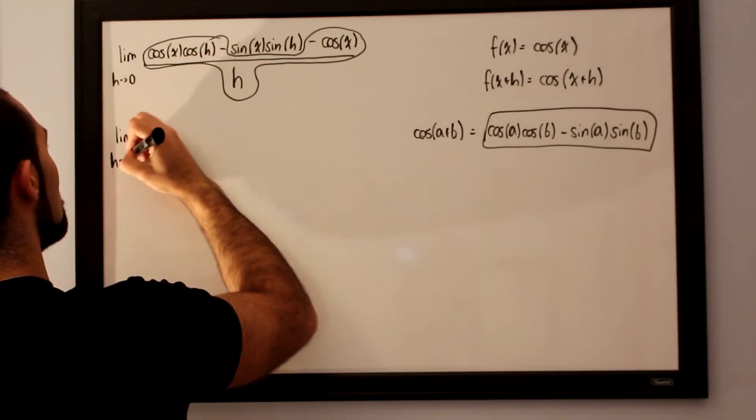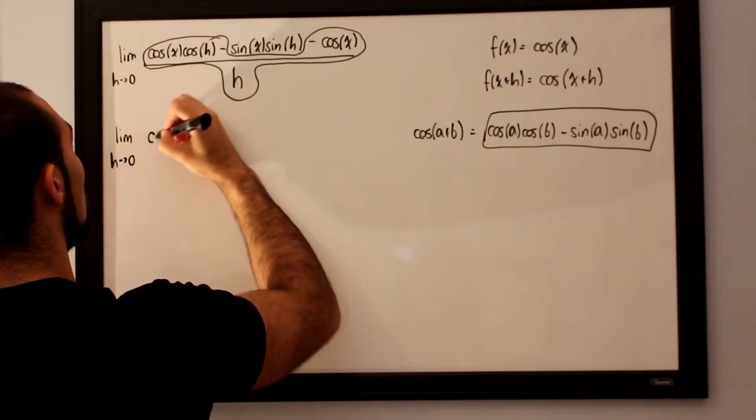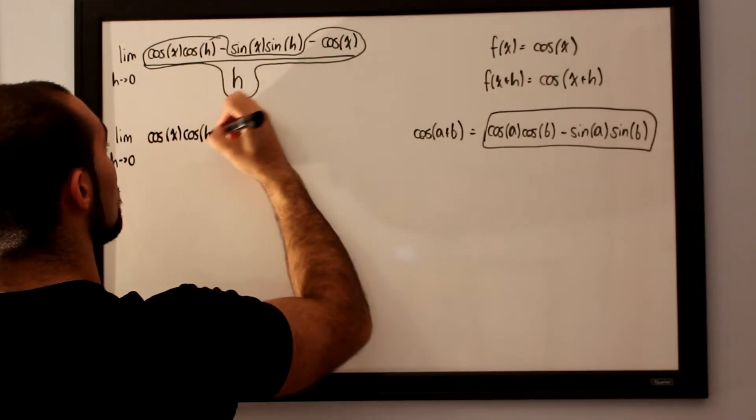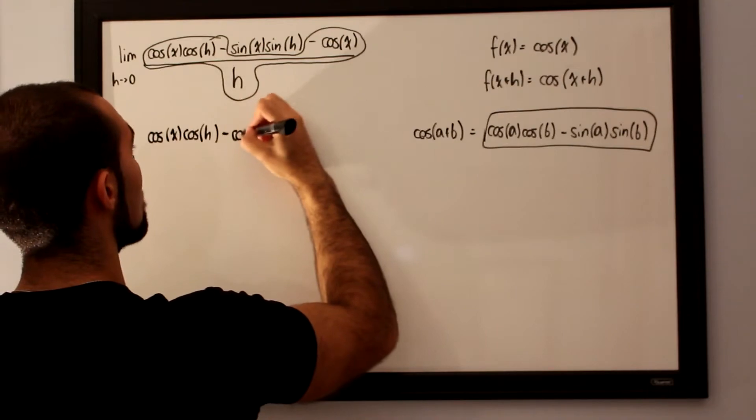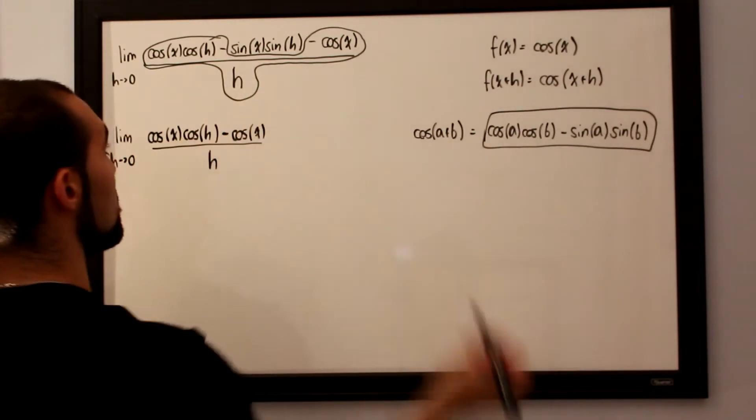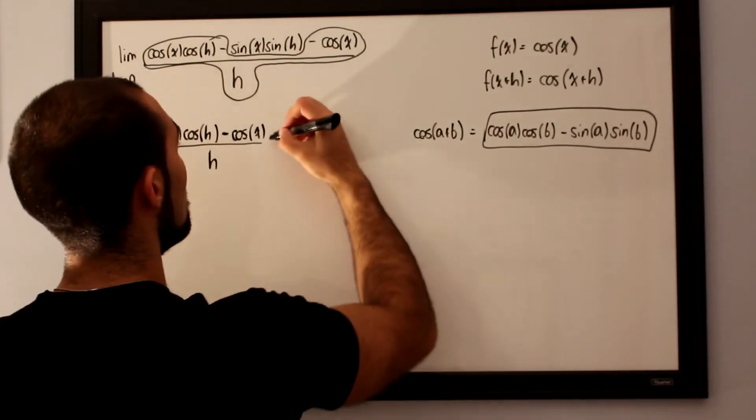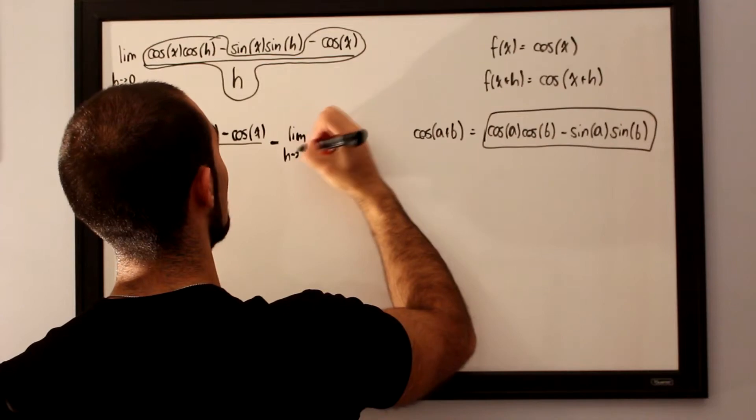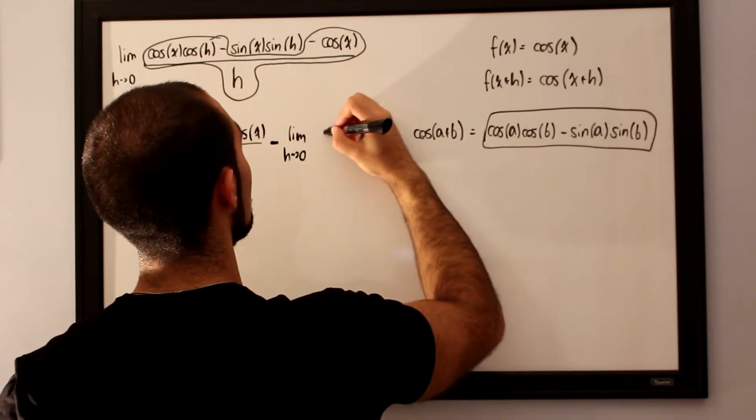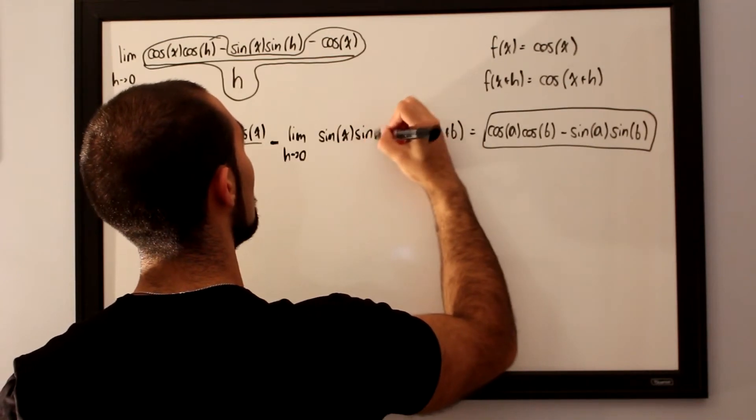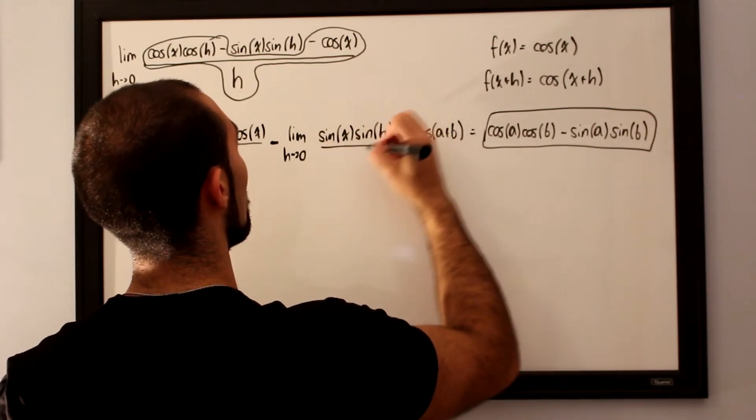So we take the limit as h approaches 0 for cosine of x, cosine of h, minus cosine of x, over h. And then we split this up into a different limit, which will be subtract off the limit as h approaches 0 for sine of x, sine of h, over h.